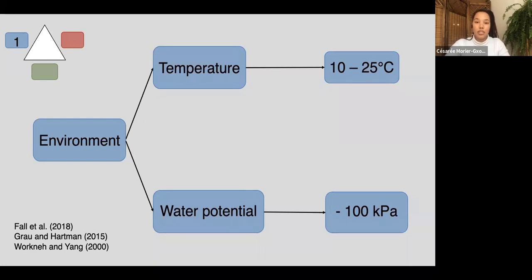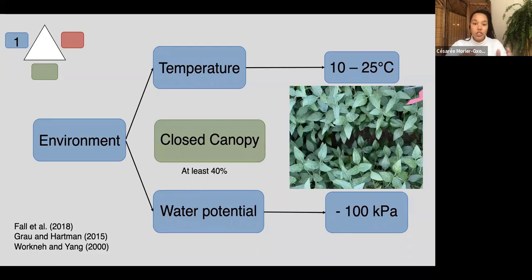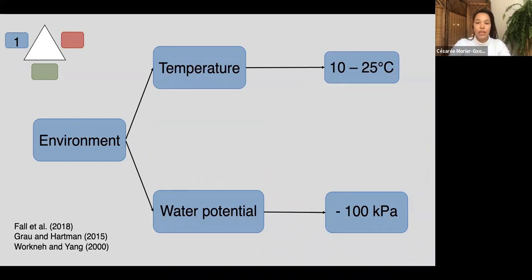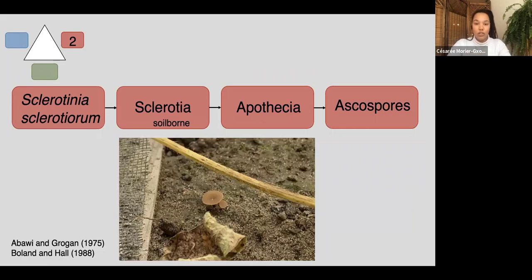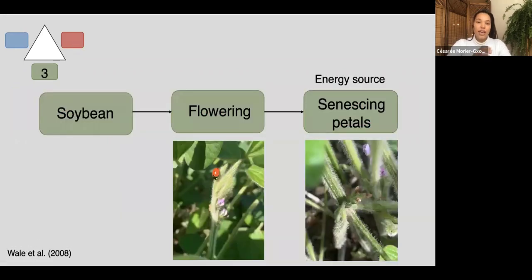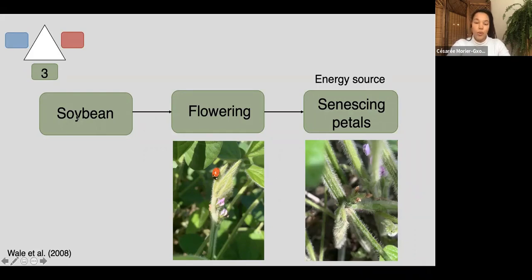A closed or partially closed canopy creates a microclimate: underneath the leaves it's more humid and shaded, so cooler — perfect conditions for the fungus. The second condition is the presence of an inoculum source — specifically when sclerotia germinate carpogenically, producing ascospores. The third condition is a susceptible host. Sclerotinia stem rot is a necrotrophic fungus that uses dead tissues as an energy source, so dead soybean petals during flowering are an excellent substrate. The crop is most vulnerable when flowering.